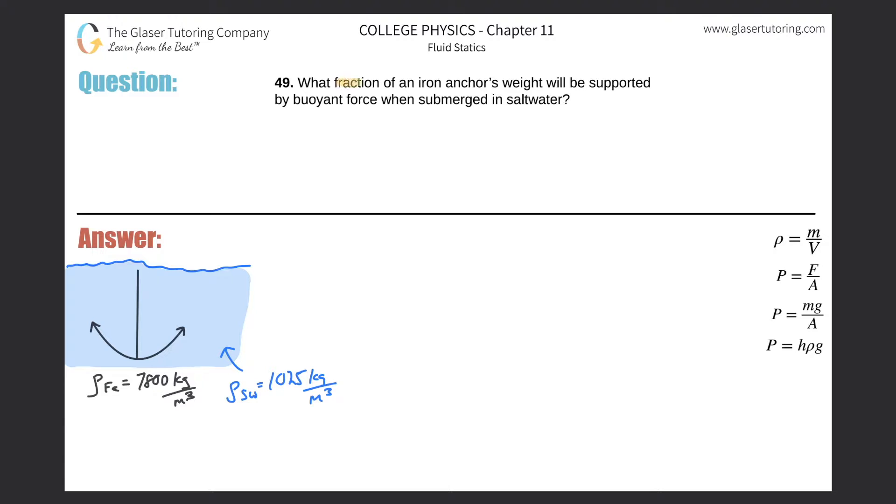Number 49: What fraction of an iron anchor's weight will be supported by the buoyant force when submerged in saltwater? To answer this question, we need a fraction - something over something else. The key critical question is: what over what? Where do the things go?